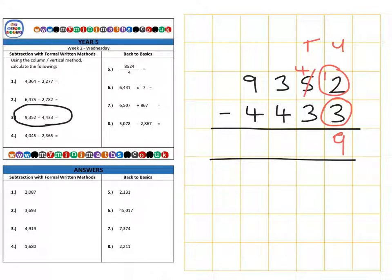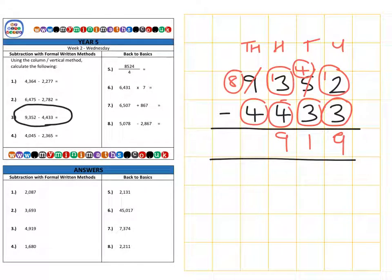Then back over to the tens. We have four tens subtract three tens, which is a single 10. Onto the hundreds column. 300 subtract 400 we can't do. So we need to borrow from the thousands column. Thirteen hundreds subtract four hundreds gives us 900. And finally, 8,000 subtract 4,000 to give us 4,000, for a final answer of 4,919.